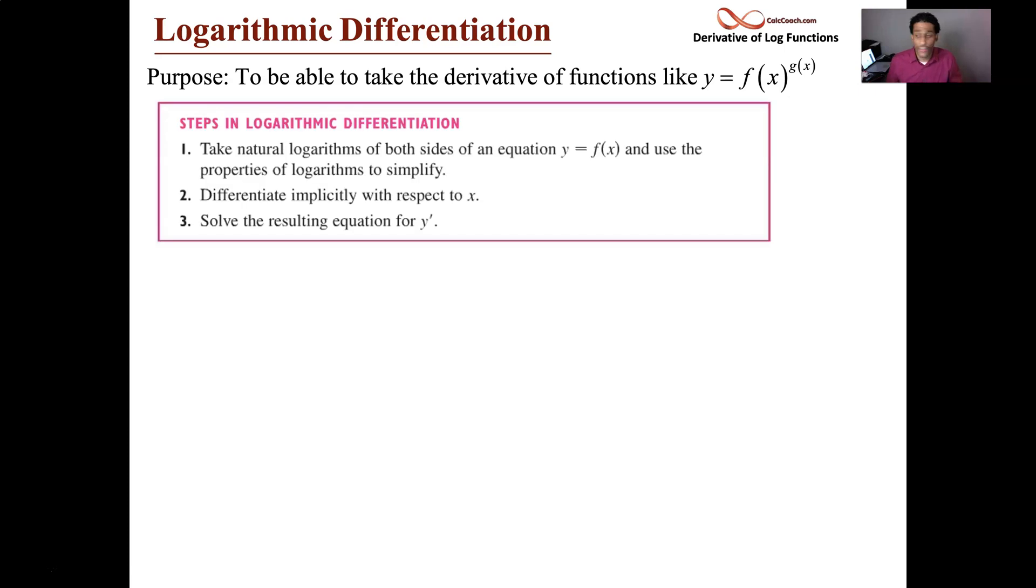Okay, and so here are the steps. Basically, we end up taking the natural log of both sides, and then we differentiate implicitly. And then we solve for y prime. Three steps.